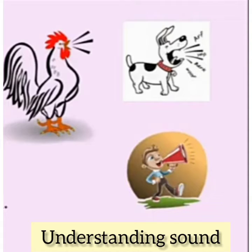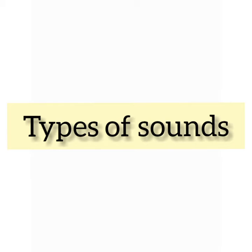We hear sounds of all kinds with the help of our ears. If you strike a steel tumbler with a spoon, it makes a sound. We hear various kinds of sounds such as the ring of a bell or telephone, the cry of a baby, and the bark of a dog. Now let us learn about types of sounds.